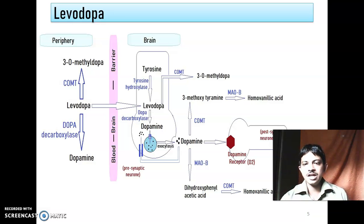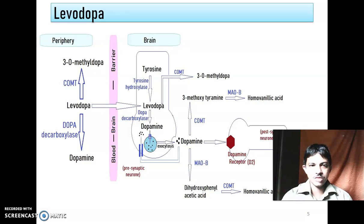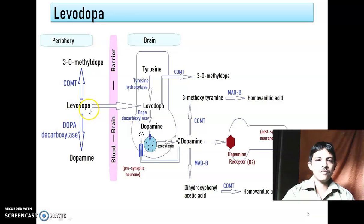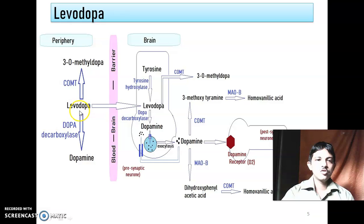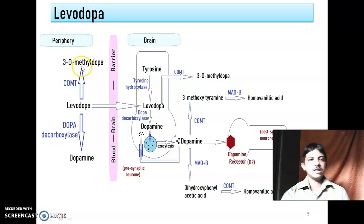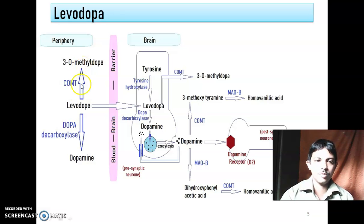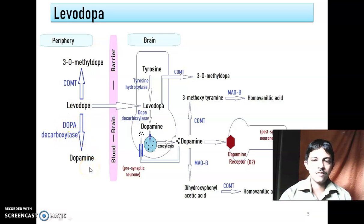This is a diagrammatic representation. In the periphery, levodopa in the presence of COMT — catechol-O-methyltransferase — converts to 3-O-methyldopa. Levodopa also, in the presence of DOPA decarboxylase, converts to dopamine in the periphery, but this peripheral dopamine cannot cross the blood-brain barrier. Levodopa itself, however, will cross the blood-brain barrier.